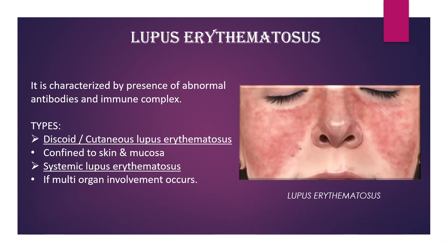What is Lupus erythematosus? It is characterized by the presence of abnormal antibodies and immune complexes. The types are: Discoid or Cutaneous Lupus erythematosus, which is confined to skin and mucosa, and Systemic Lupus erythematosus, which involves multi-organ involvement.